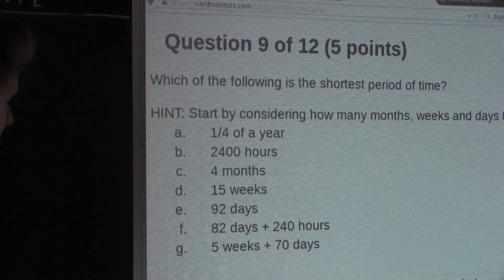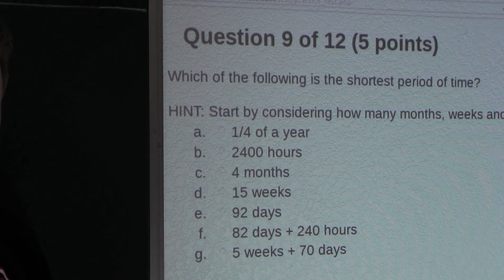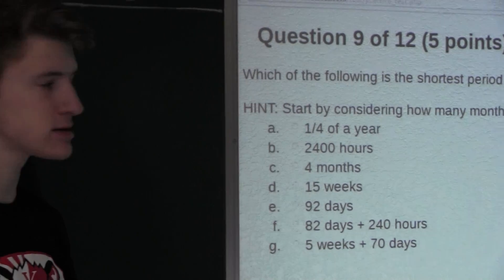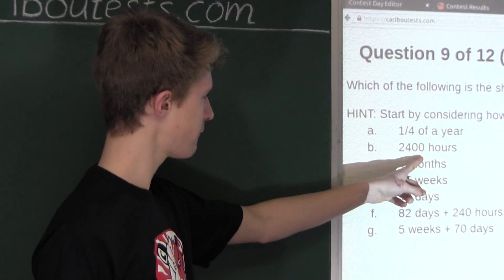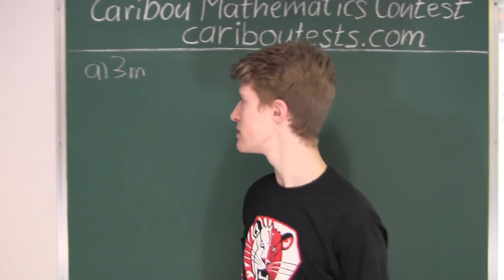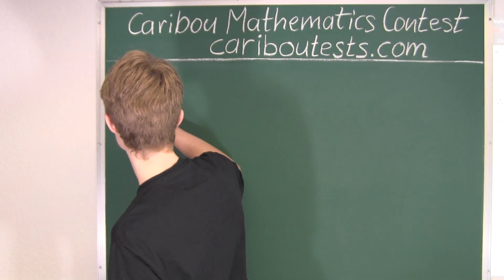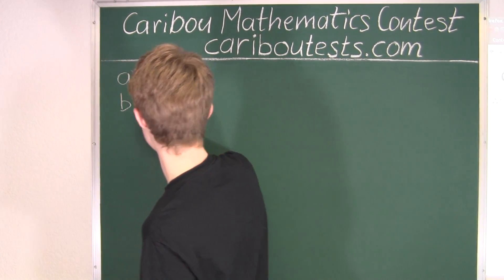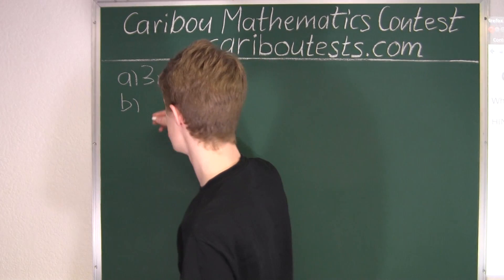Option B: 2,400 hours. One day has 24 hours, so if we divide 2,400 by 24, we get 100 — so 100 days.